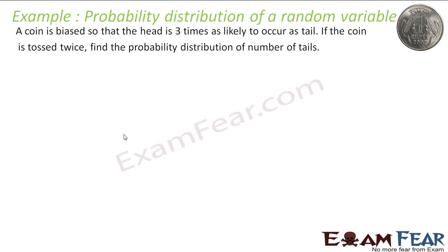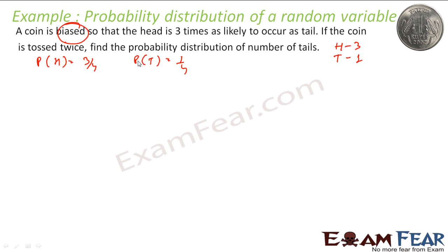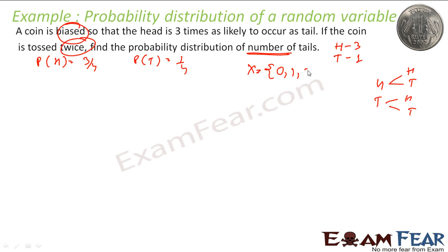This next question is similar to what we have done, but for a biased coin where the head is 3 times as likely to occur as tail. So if you throw a coin 4 times — sorry — if the coin is tossed twice, we need the distribution for number of tails. The probability of head is 3 by 4 and probability of tail is 1 by 4. The coin is biased. Number of tails can be 0, 1, or 2.